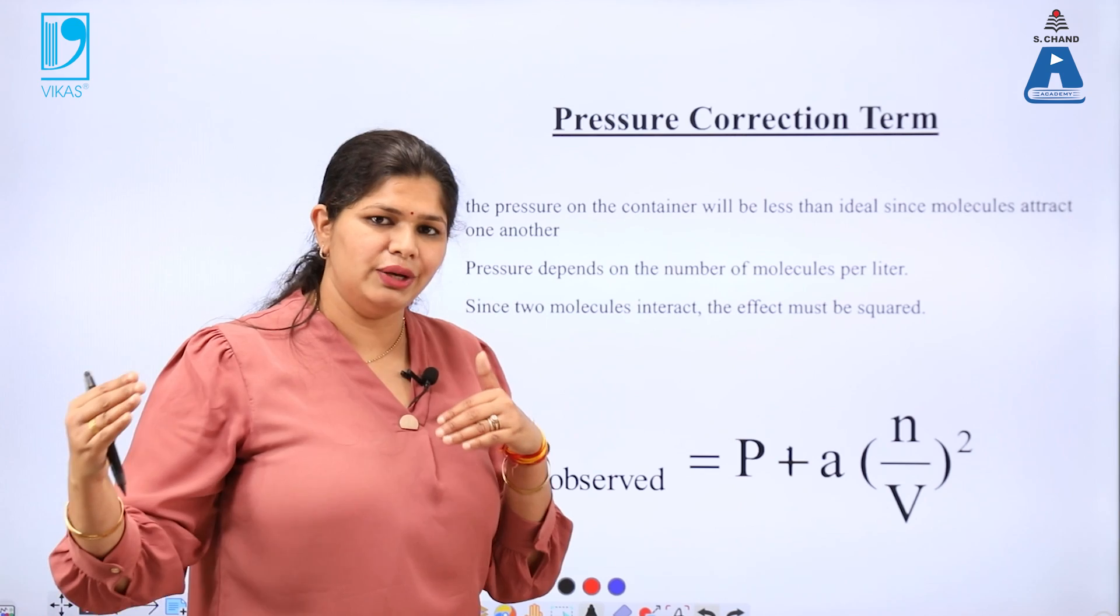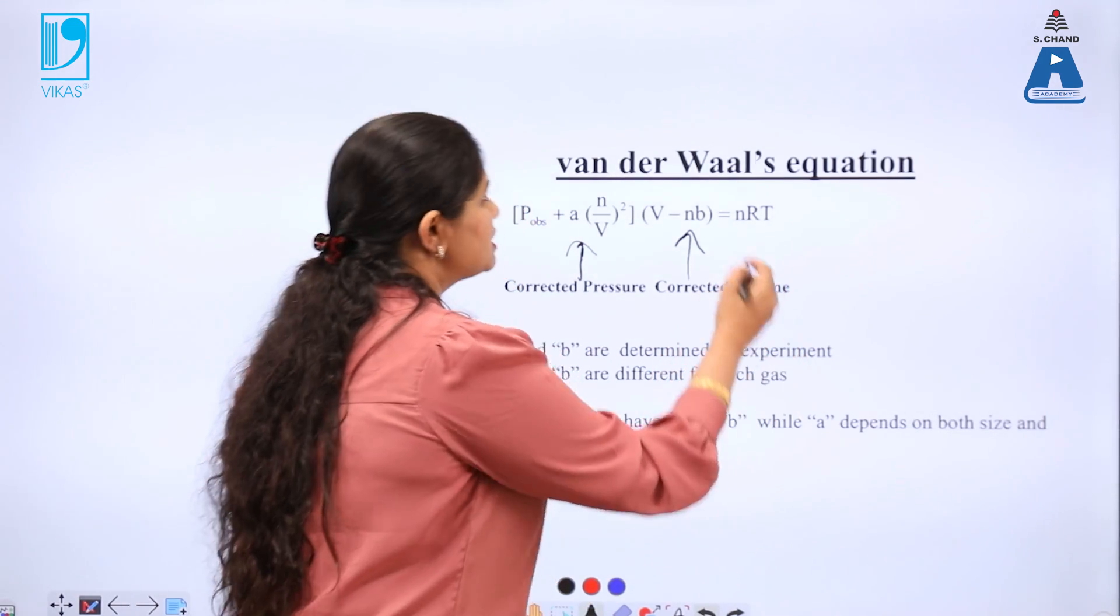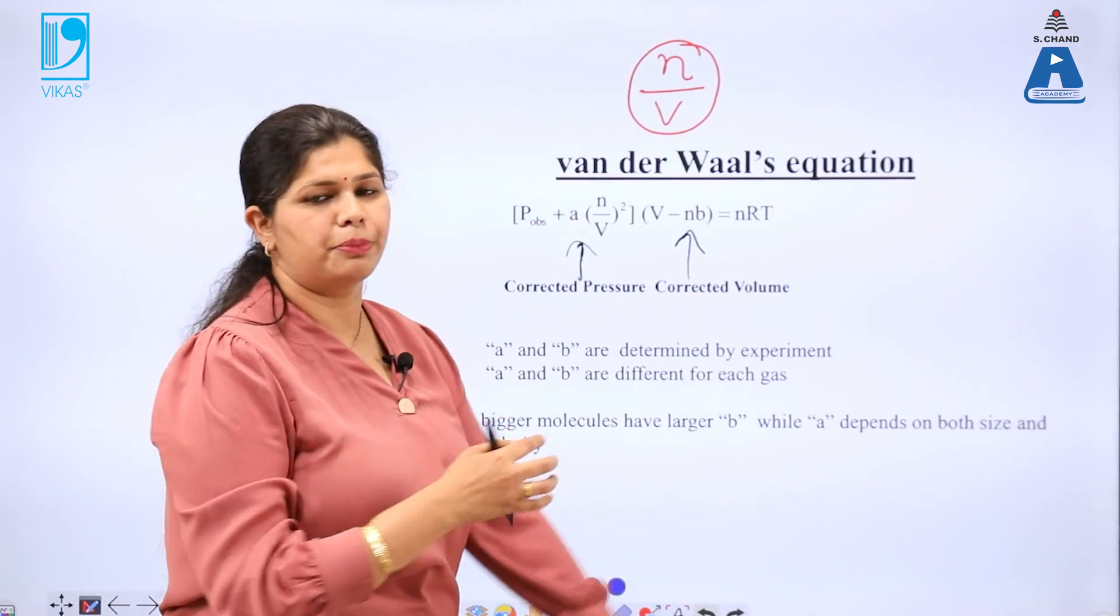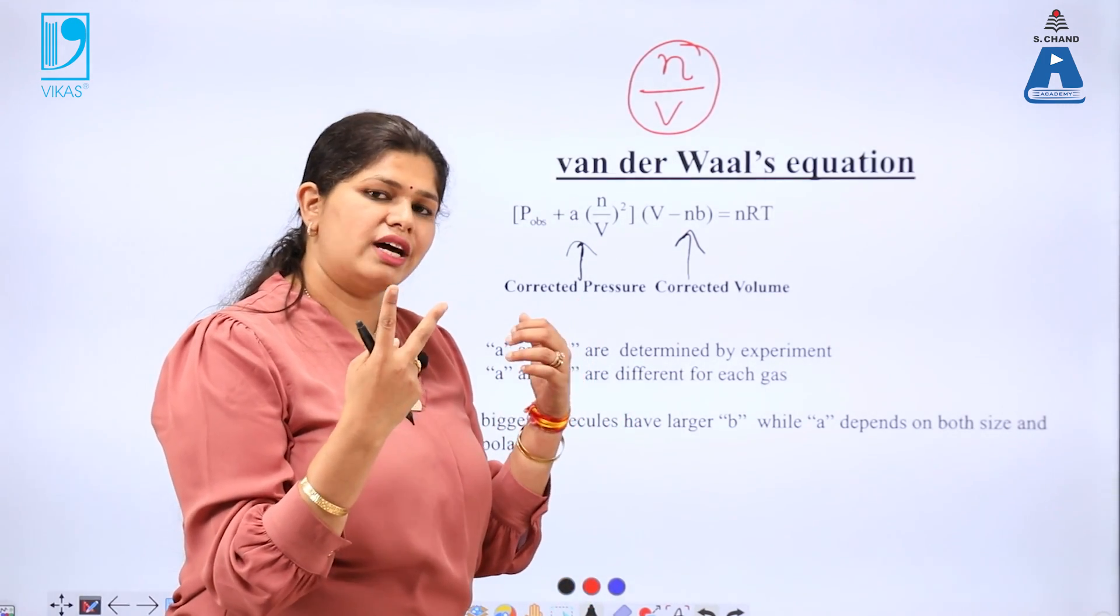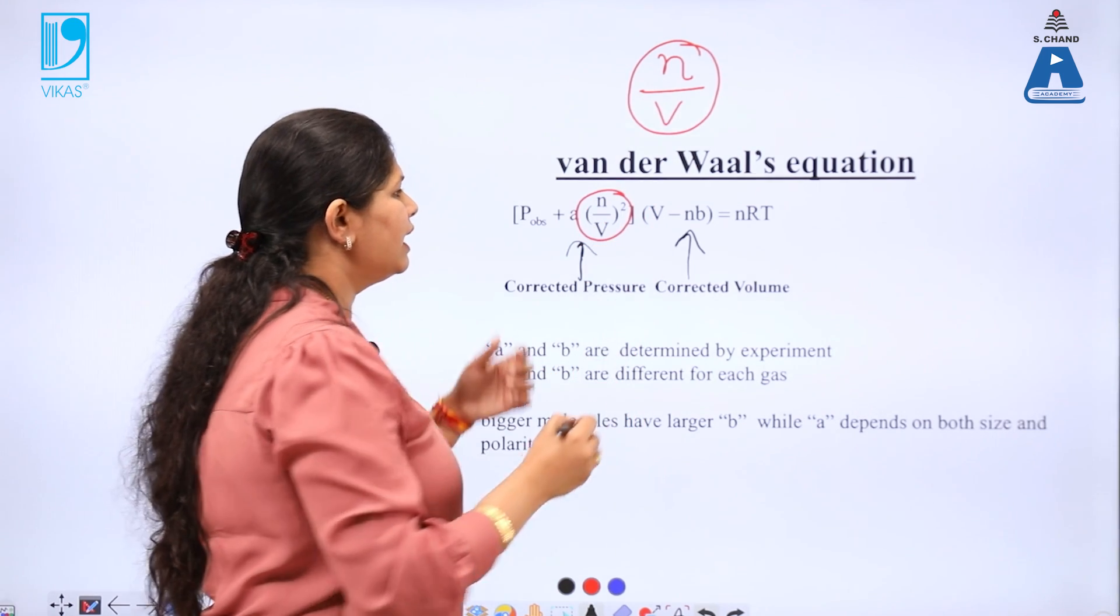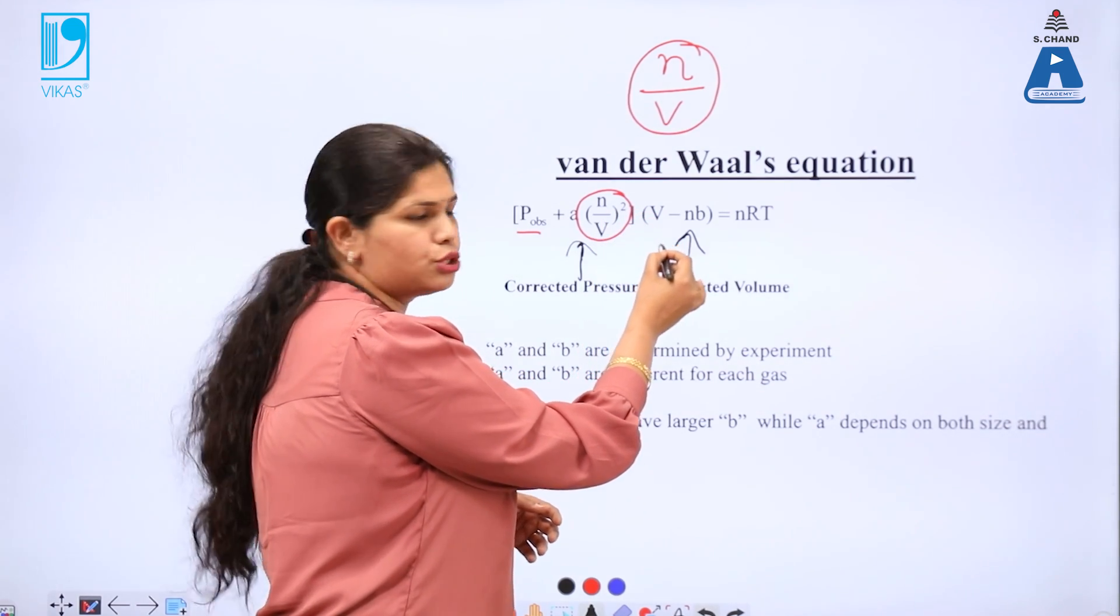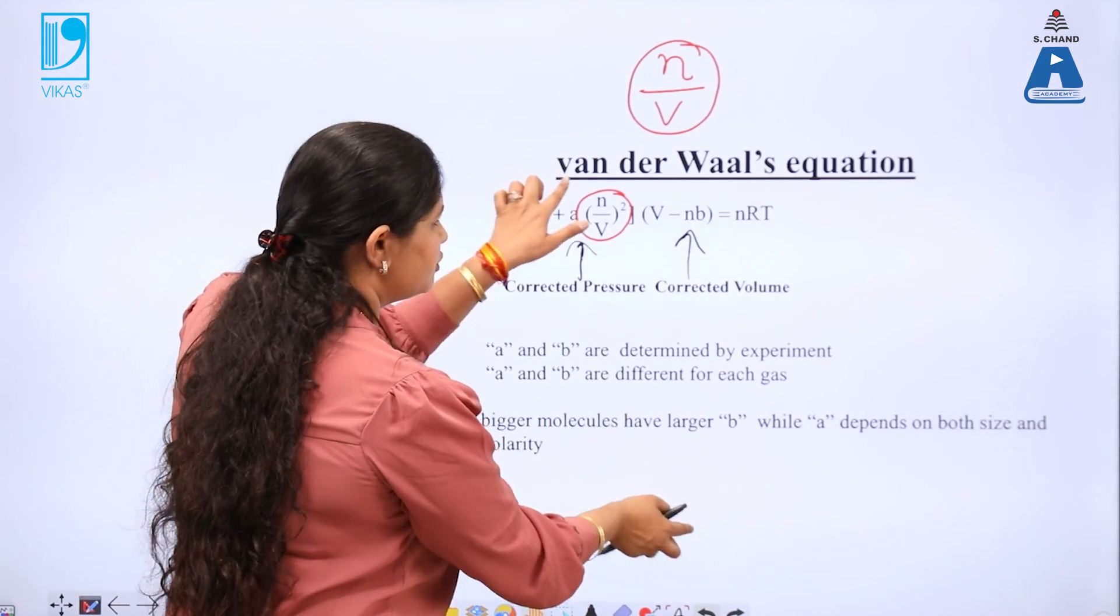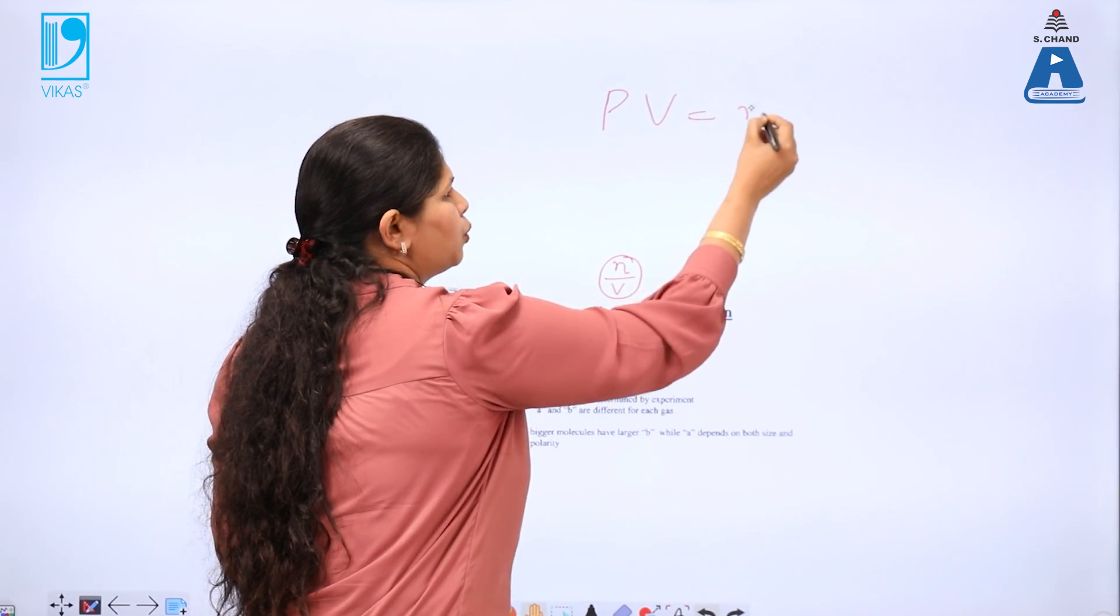To make it equal to the ideal gas equation, we have the two things on which it depends. It depends upon the number density N by V that is number of molecules present in the system. And because there are two molecules which are striking or which are required for the collision, we take the square of this number density and hence we have this pressure plus A N square by V square into V minus NB equal to NRT.